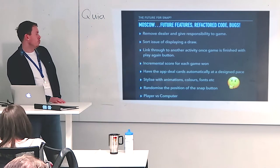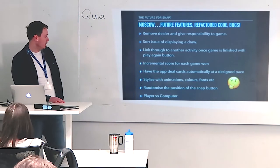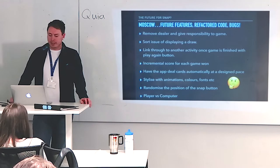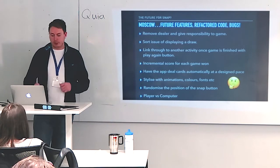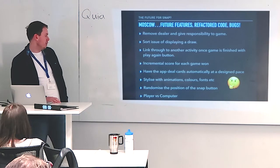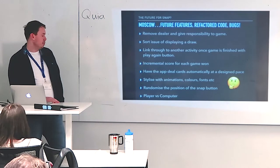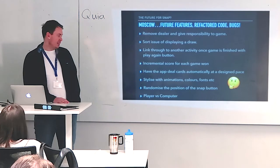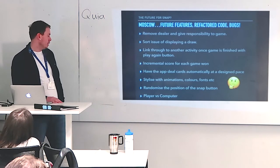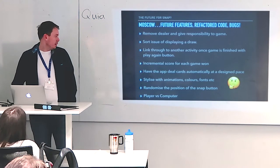I wanted to link through to another activity once the game is finished, add another play button, and have an incremental score for each game so you can have more than one game. I've also seen an app where you didn't have to keep clicking 'player one plays, player two plays' — the cards are just dealt automatically at a steady pace. I really did want to get on to stylizing the animations with different colours and fonts. One idea to spice up the game was randomizing the position of the snap button so it jumps around the screen. And I thought about a player versus computer mode, but speaking to my advisor, he said that's starting to bring in AI and it seemed like a bit of a mess.